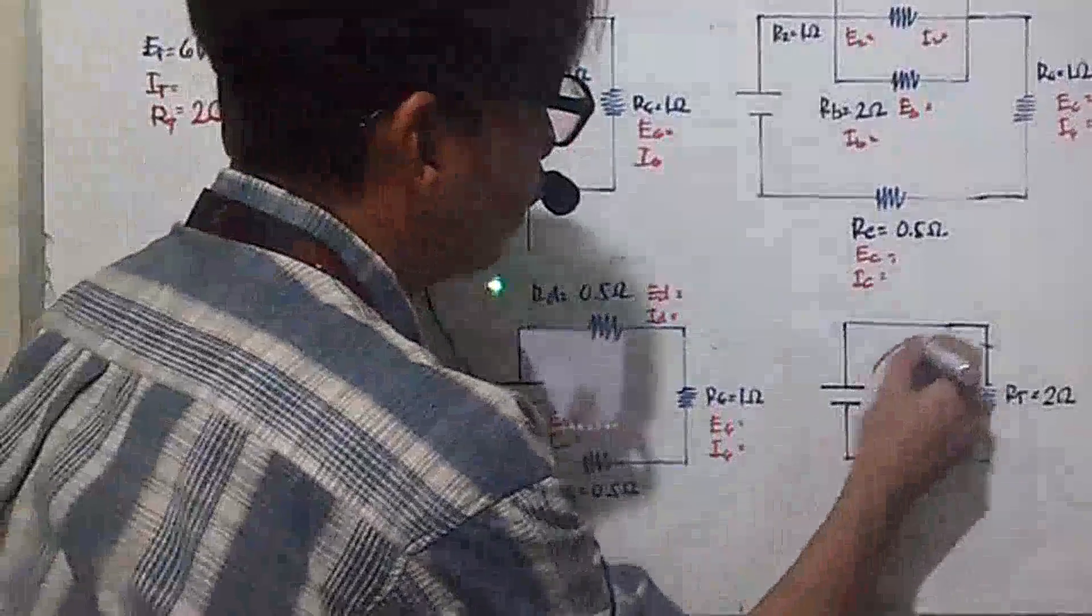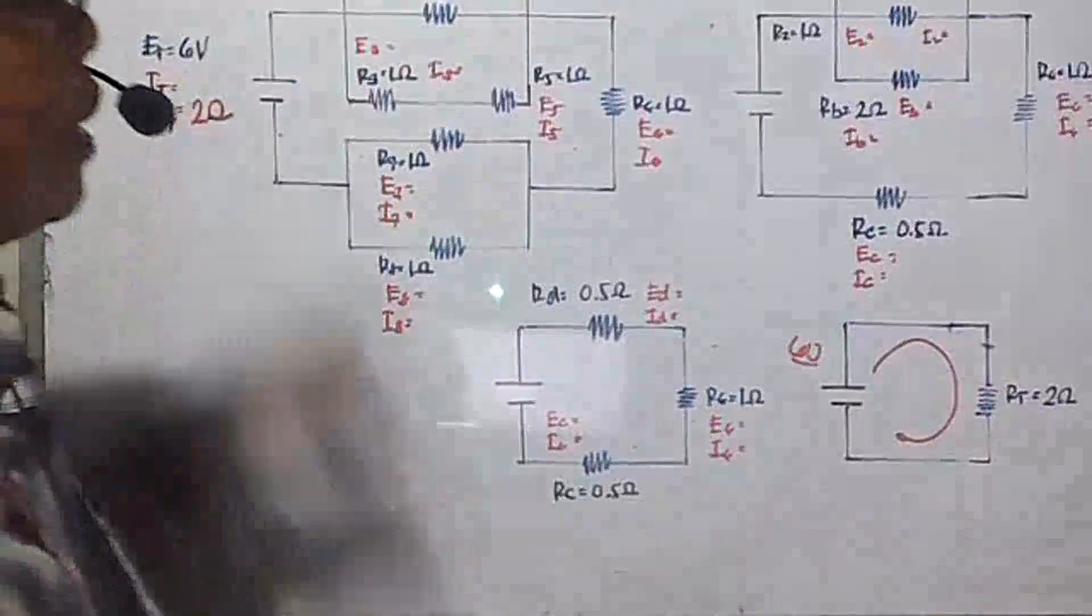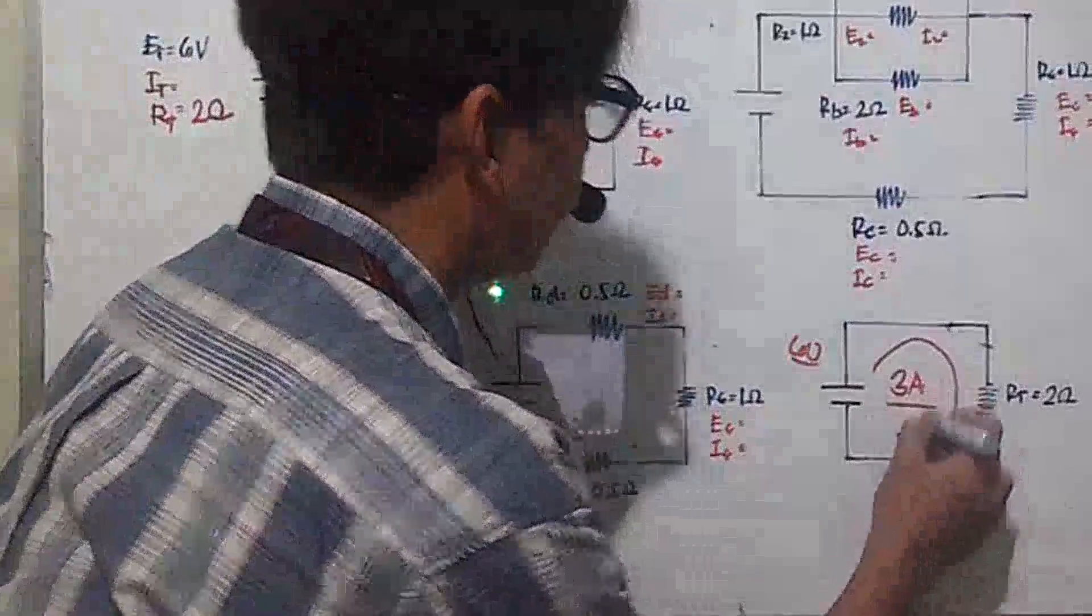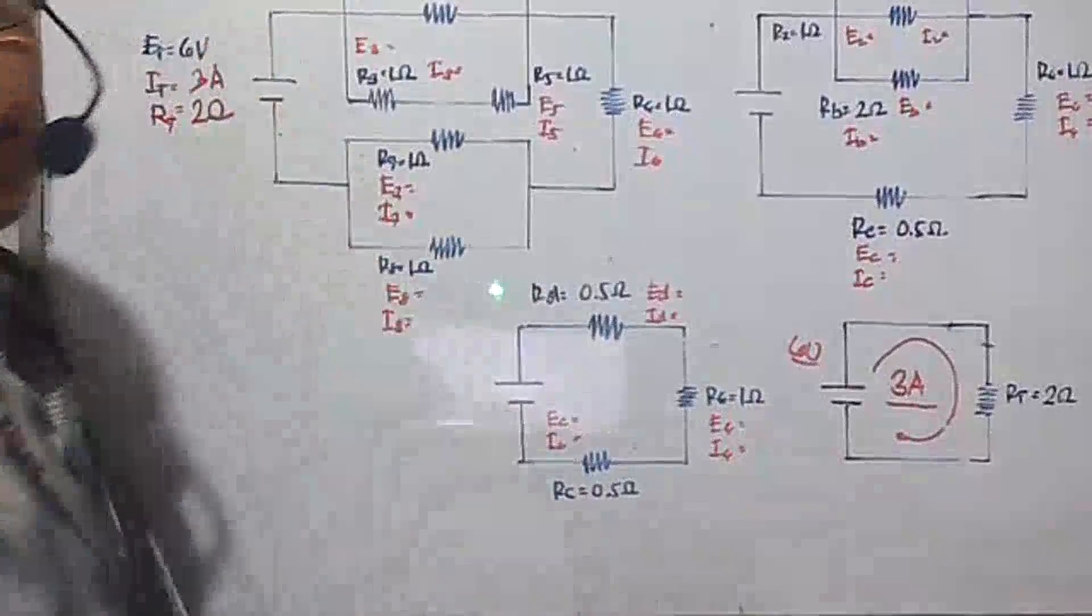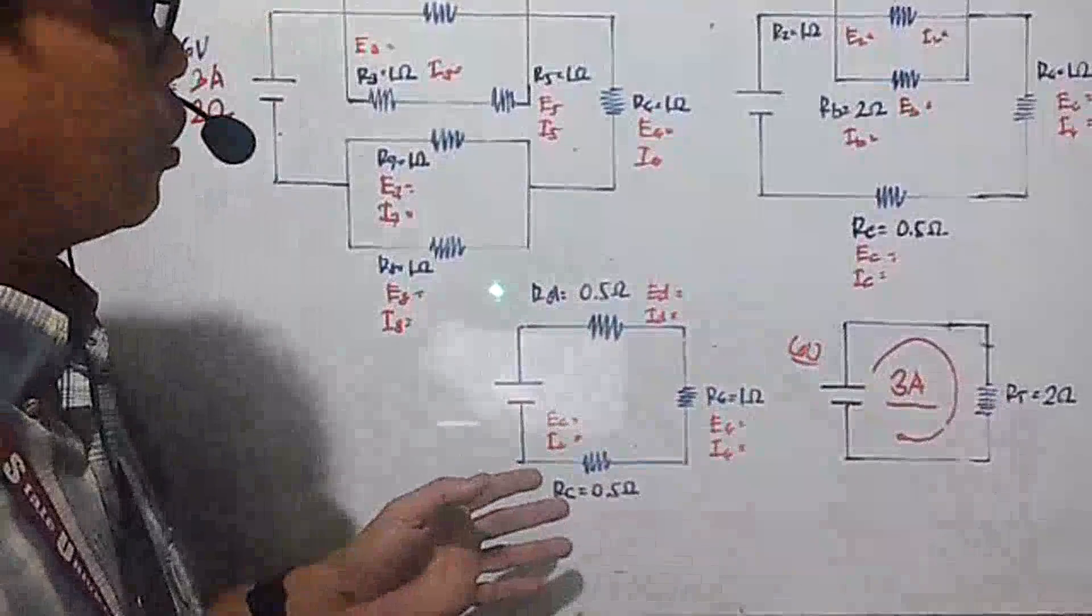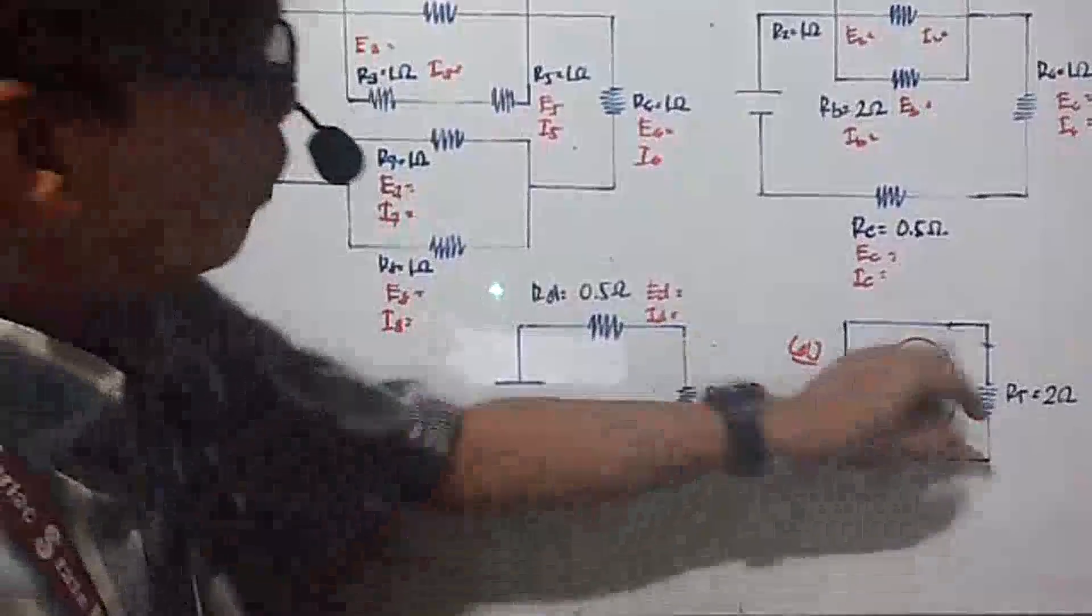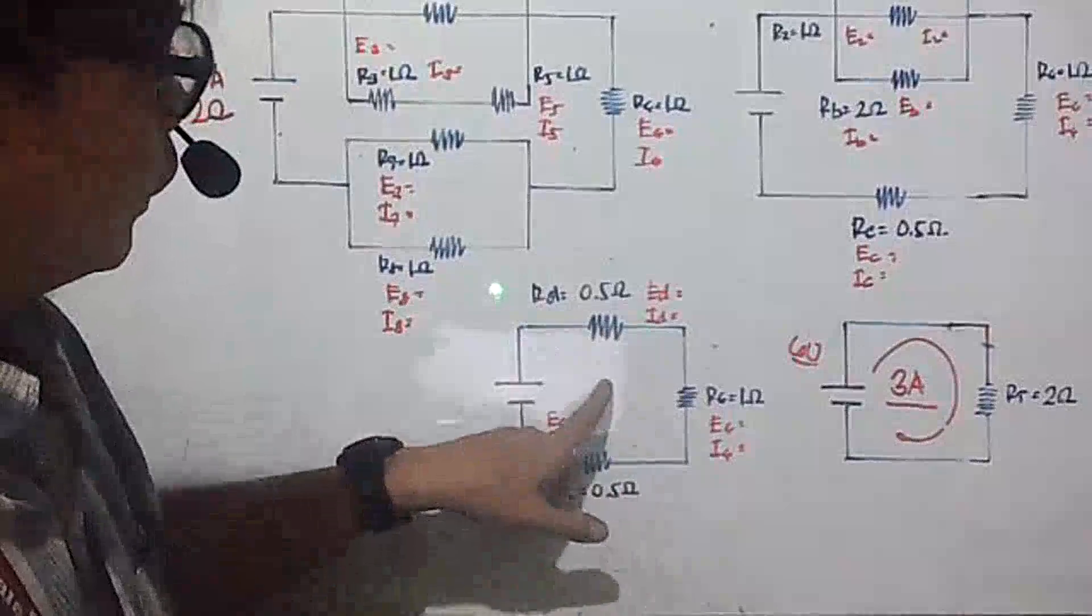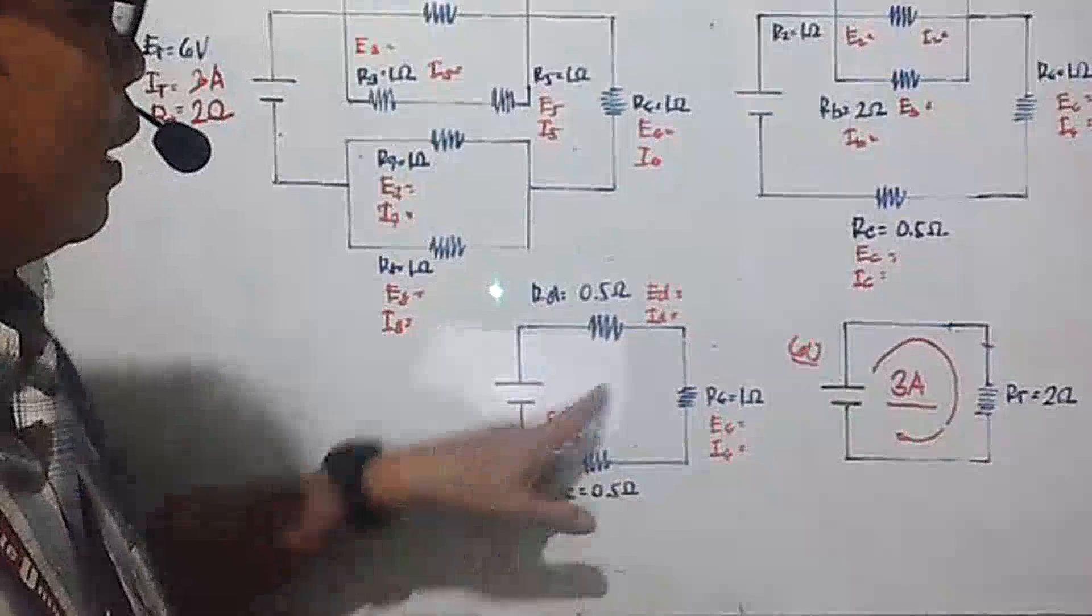Solving for the total current, you have 6 volts given. So it is E divided by R, you get 3 amperes. So 3 amperes here is your I total. Now it's going back. So meaning you know this. Now this resistor will be breaking into 3 resistors. When it breaks, it is still a single circuit. So there's only one flow of current. Therefore, series circuit.